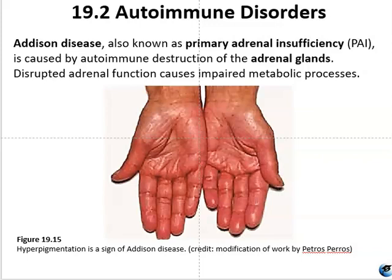Addison disease is another name for adrenal insufficiency. It is an uncommon disorder that occurs when your body doesn't produce enough of certain hormones. The adrenal glands, located just above the kidneys, do not produce enough cortisol and often not enough aldosterone. Addison disease occurs in all age groups and in both sexes, and it can be life-threatening. Treatment involves taking hormones to replace those not being produced naturally.